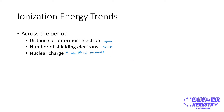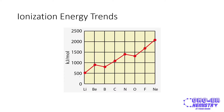The graph of first ionization energies for period two elements shows a general increase across the row, but there are two anomalous dips in this pattern: one when going from beryllium to boron, and another when going from nitrogen to oxygen.